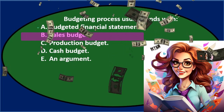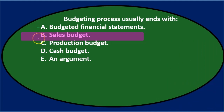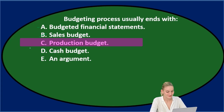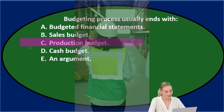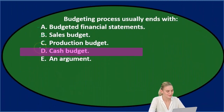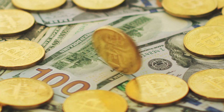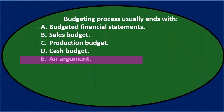B says the sales budget — that's got to be one of the first things we do, because we can't do much else until we figure out how many units we're going to sell. So that would be towards the beginning of the process. C says the production budget — you're going to need that somewhere in the upper-middle area, because you need it to know how much you're going to spend and for your cash flow budget. So I don't think that's it. D says the cash budget, and that's towards the end — we've got to do all the other stuff before we can do the cash budget. And E says an argument — hopefully arguments happen during the budgeting process, and by the end you've squashed or reconciled them. So it's not going to be E. We're left with A and D.